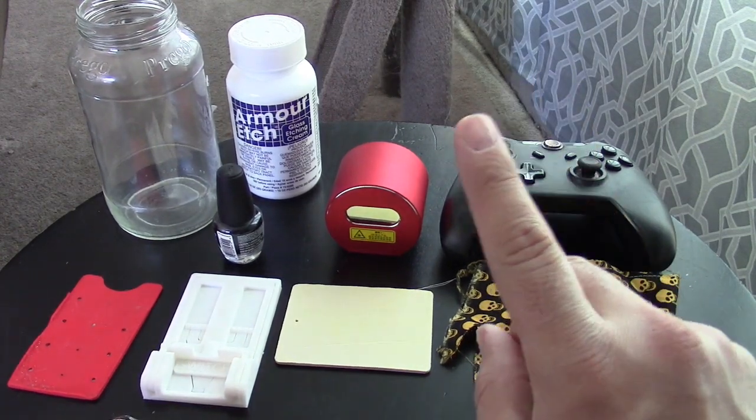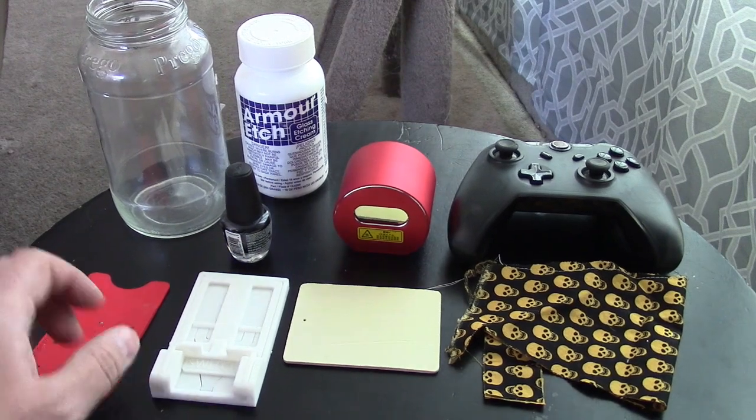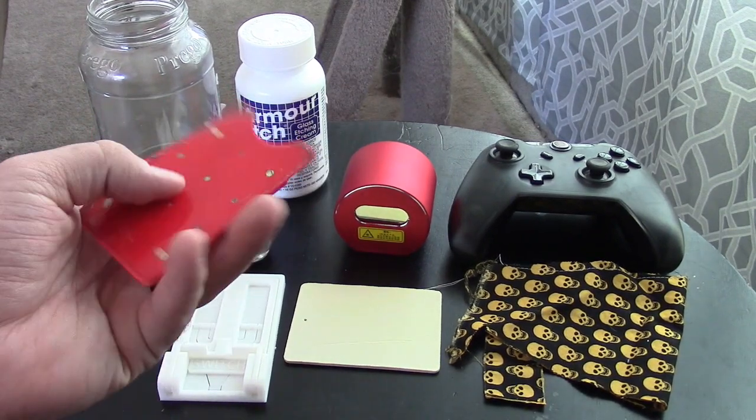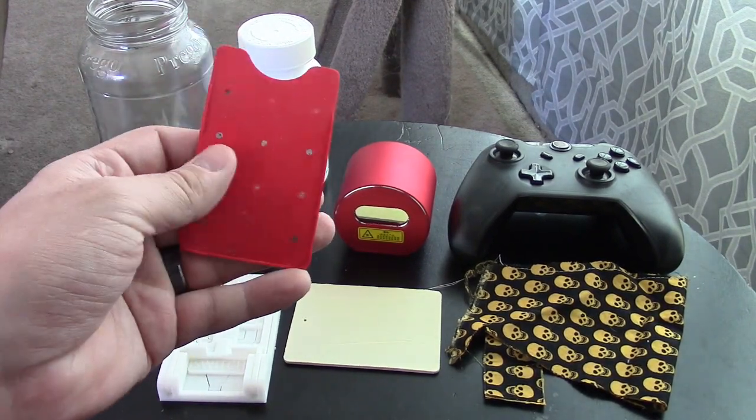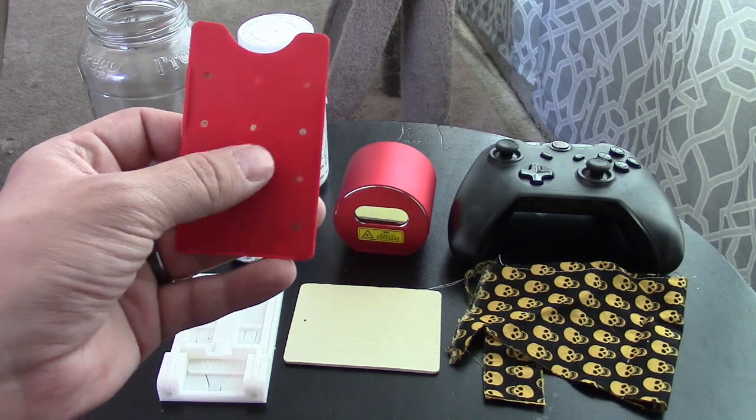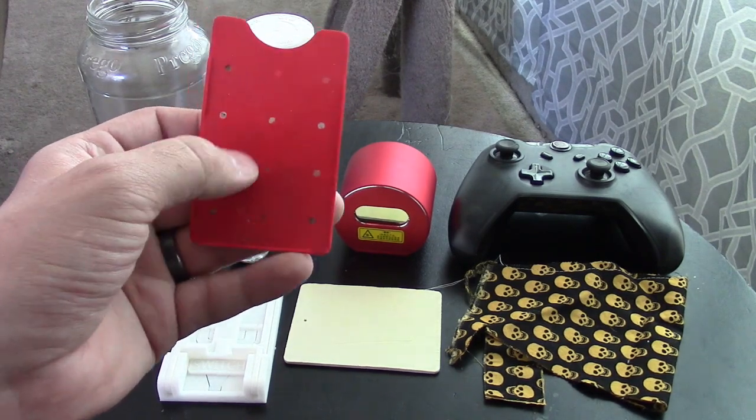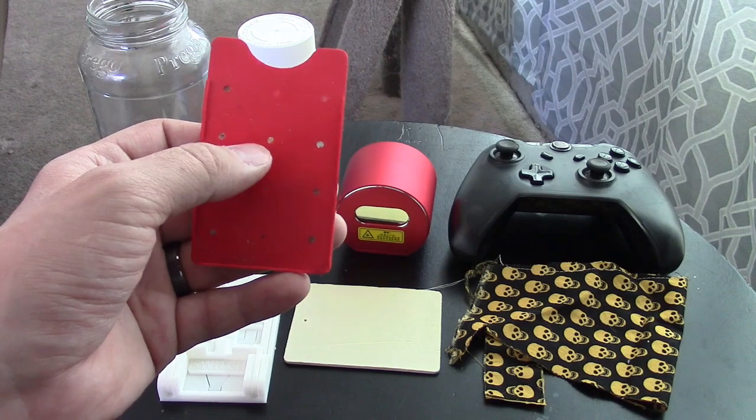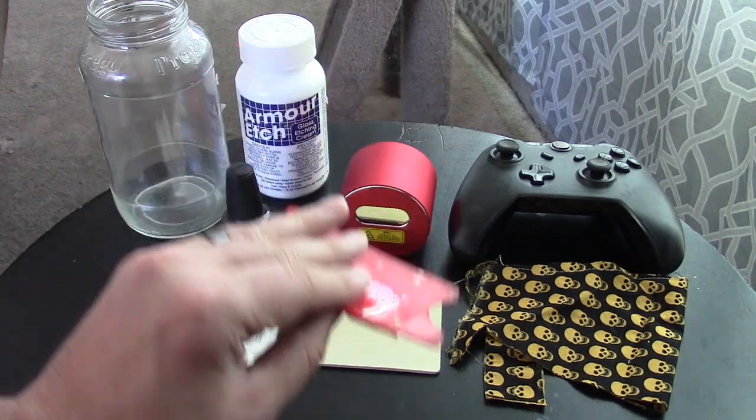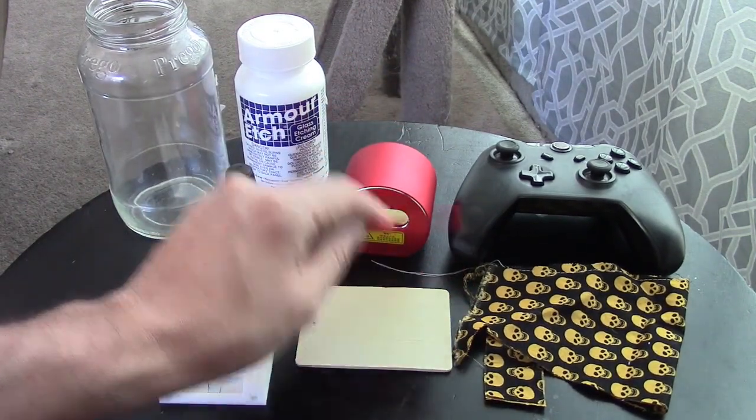So today we're going to test it on several different materials. We're going to try this rubber. It was part of a phone case. I'm just going to see if we could make it like a stamp, burn the outlines and leave a nice imprint so that we could put ink on it and go boop, boop, just like that.